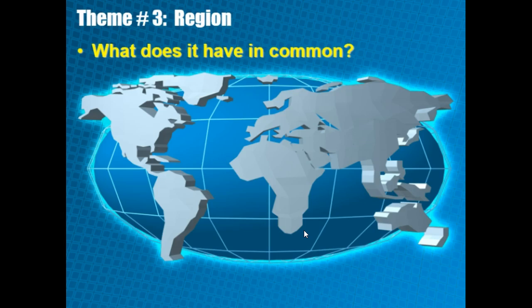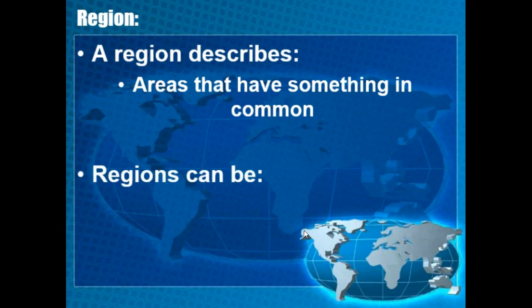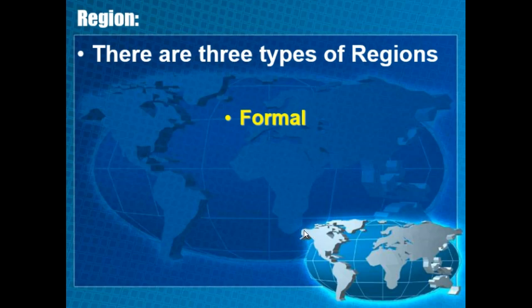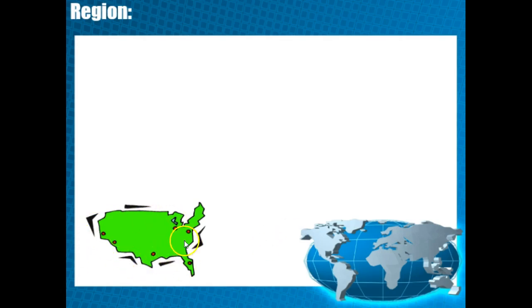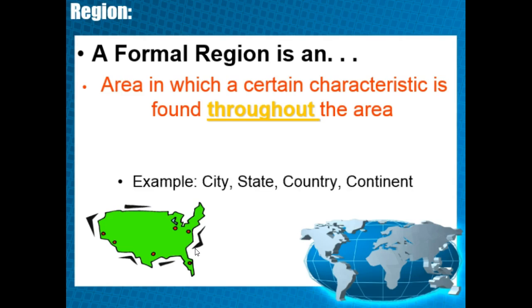Theme number three: region. The definition for region is 'what does this area have in common?' A region describes areas that share something in common; regions can be big or small. There are three types of regions. The first is formal — a formal region is clearly defined, like the United States, the states within it, or the cities within it. A formal region is an area where certain characteristics are found throughout, such as a shared constitution, common language, or the same capital city.